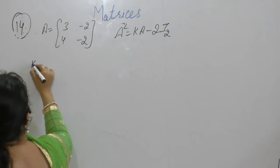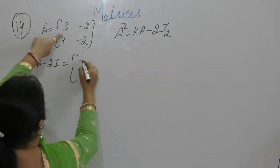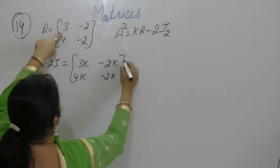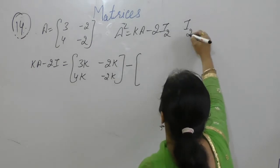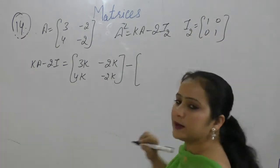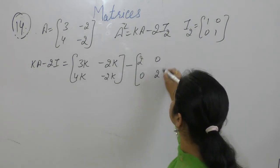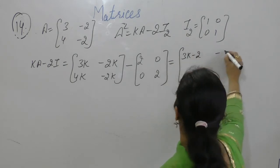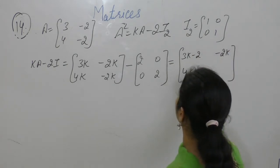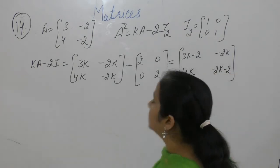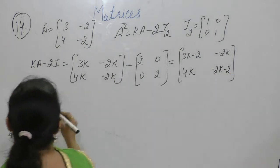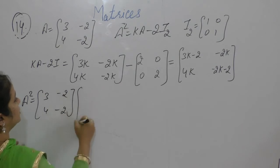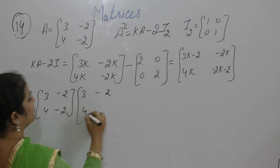So k into A minus 2I: k into A gives [[3k, -2k], [4k, -2k]]. And 2I equals 2 times [[1,0],[0,1]] which is [[2,0],[0,2]]. So it becomes [[3k-2, -2k], [4k, -2k-2]]. Now we want to find the value of A squared, which is A into A: [[3,-2],[4,-2]] times [[3,-2],[4,-2]].